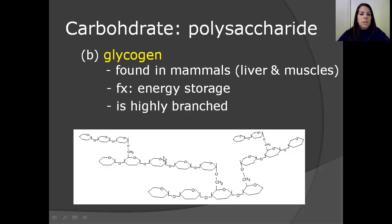The next molecule that you want to, or complex molecule that you want to know about is glycogen. Glycogen is found in mammals, in the liver, and in the muscles. And its function is energy storage as well. And when you're looking to recognize it in a diagram, it is highly branched. So, you can see here is one chain, there's another chain, and another chain, another chain of glucose, and another chain of glucose. That is a highly branched molecule.